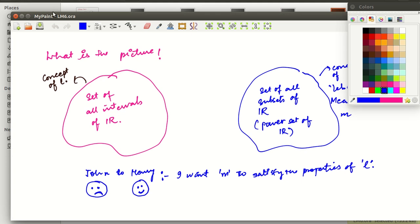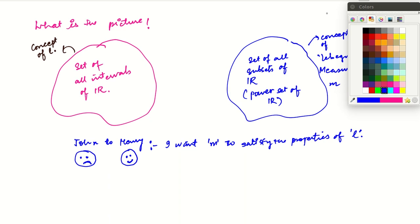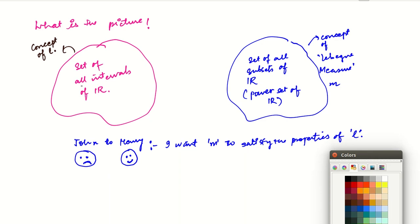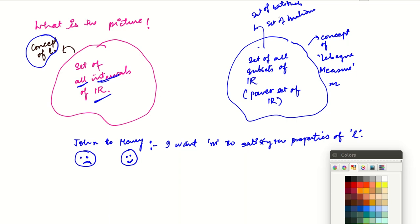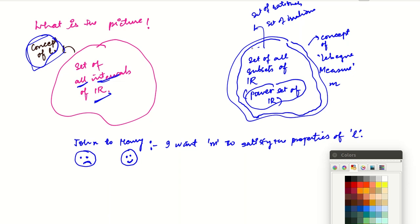So what is the picture we have right now? We have the set of all intervals of R and we have a concept of length for that set. We also have the set of all subsets of R — the power set of R — which includes the set of rationals and the set of irrationals that John was worried about, as well as other subsets of R.